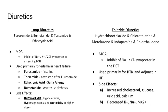Lastly, we have bumetanide. They actually use this more than I was led to believe in pharmacy school. On the East Coast it was reserved mostly for patients who had ascites from liver cirrhosis because it has a little bit better bioavailability. When patients are bloated, cirrhotic, and have massive ascites, furosemide tends not to cause a good diuretic effect, so they use bumetanide.